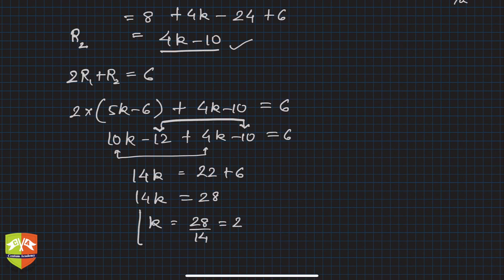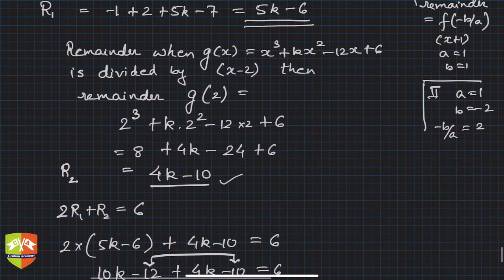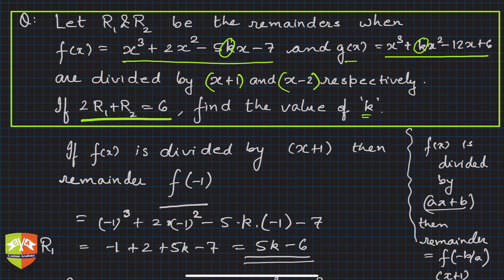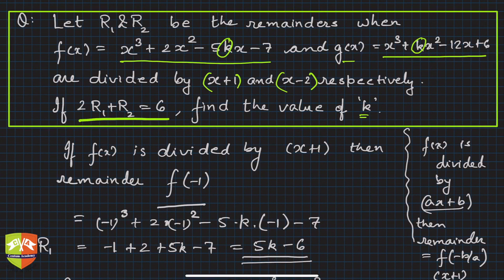So the answer is k = 2. The underlying concept used here is the remainder theorem — finding remainders without performing long division. Instead of using the longer division method to find the remainders and then substituting into the equation, we directly applied the remainder theorem, which is much more efficient. Thank you.